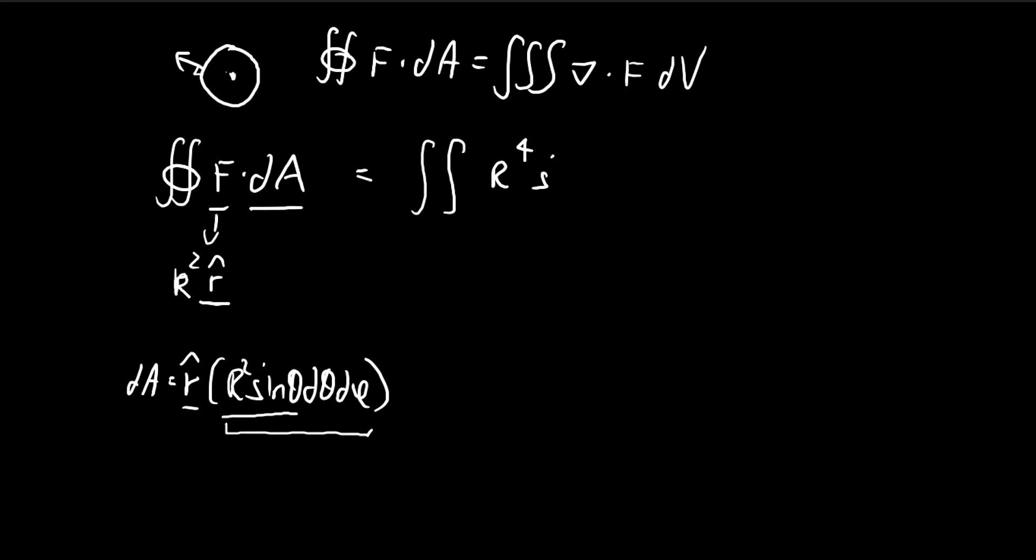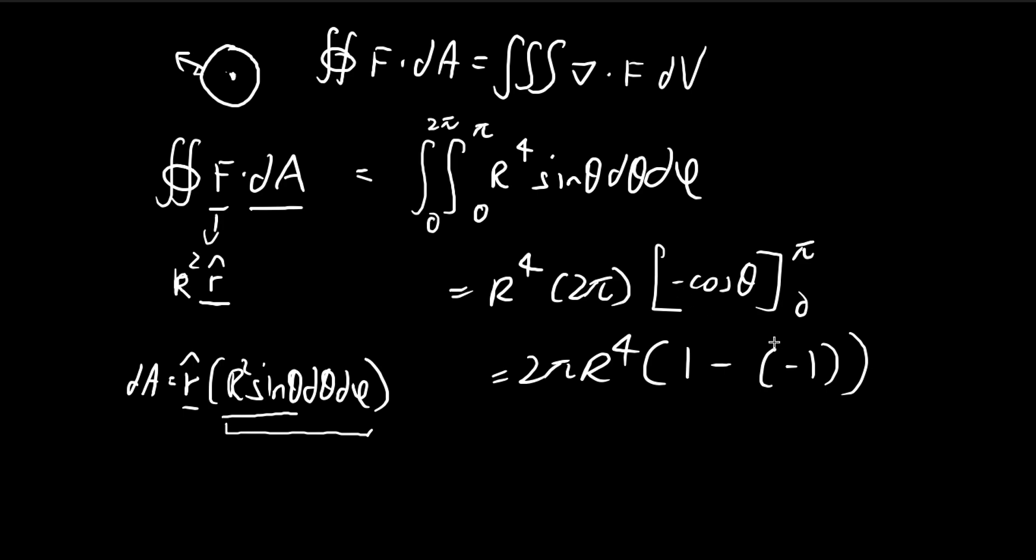And if theta ranges from 0 to pi, phi ranges from 0 to 2 pi, so that essentially draws out the entire sphere. So there are no phi terms inside, so integrating that's just 2 pi. And then integrating sine theta from 0 to pi, you just get 2. So cosine pi is equal to negative 1, so you get 1, and then you minus negative 1, because cosine 0 is 1, so you have a negative here, so you get negative 1. So there you get 4 pi r to the power of 4. So this is the amount of flux that's going through the surface.